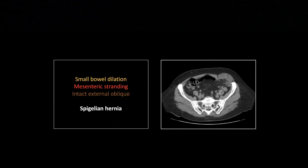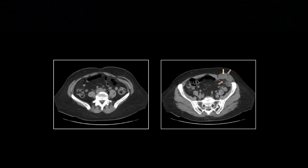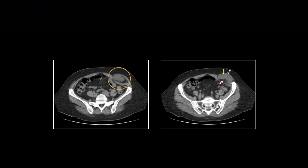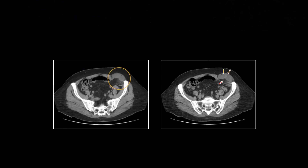Some other strange ones. This is a Spigelian hernia, which is one that does not completely exit the cavity. It is herniating through the transversalis and internal oblique, but it is still contained by the external oblique muscle. You can see there's dilated small bowel and mesenteric stranding, but there is an intact external oblique muscle overlying the whole thing, sitting right between those oblique muscle layers.